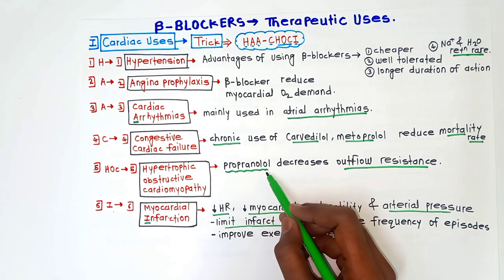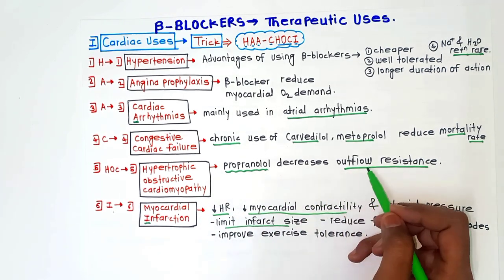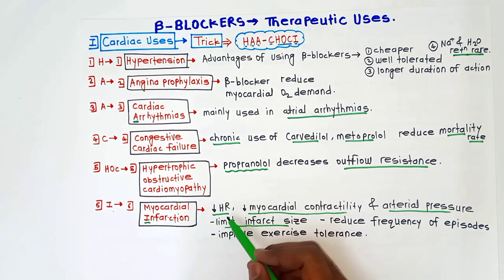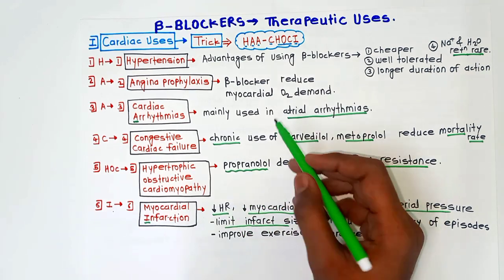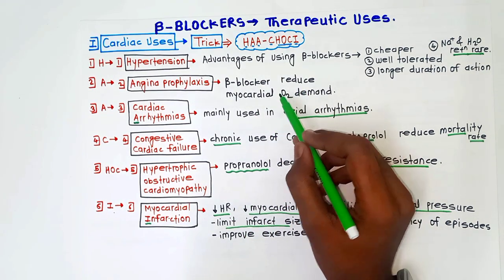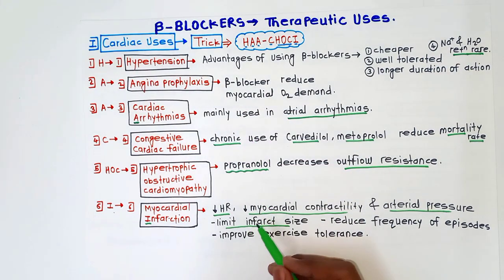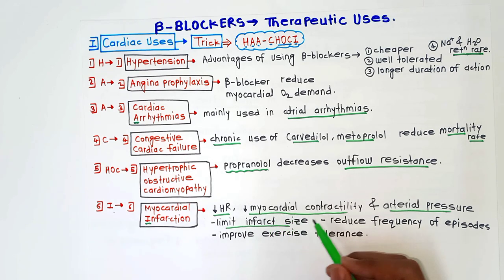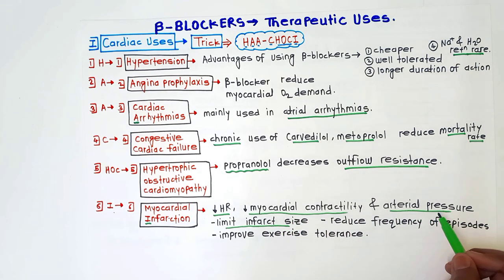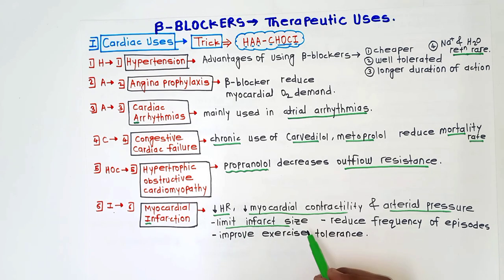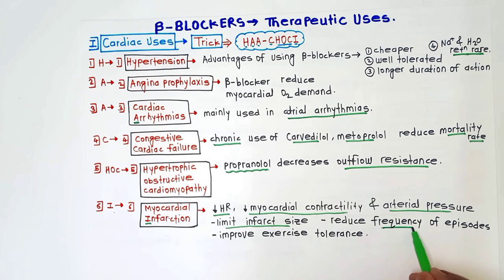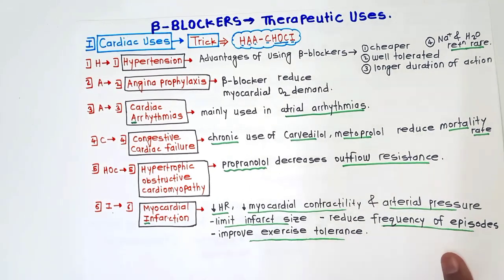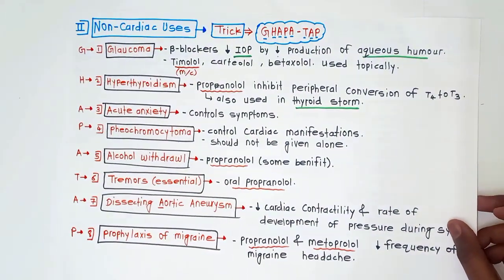For hypertrophic obstructive cardiomyopathy, propranolol is used, which decreases outflow resistance. For myocardial infarction, beta blockers reduce myocardial oxygen demand — as in angina prophylaxis — by decreasing heart rate, myocardial contractility, and arterial pressure. They also limit infarct size, reduce the frequency of episodes, and improve exercise tolerance.